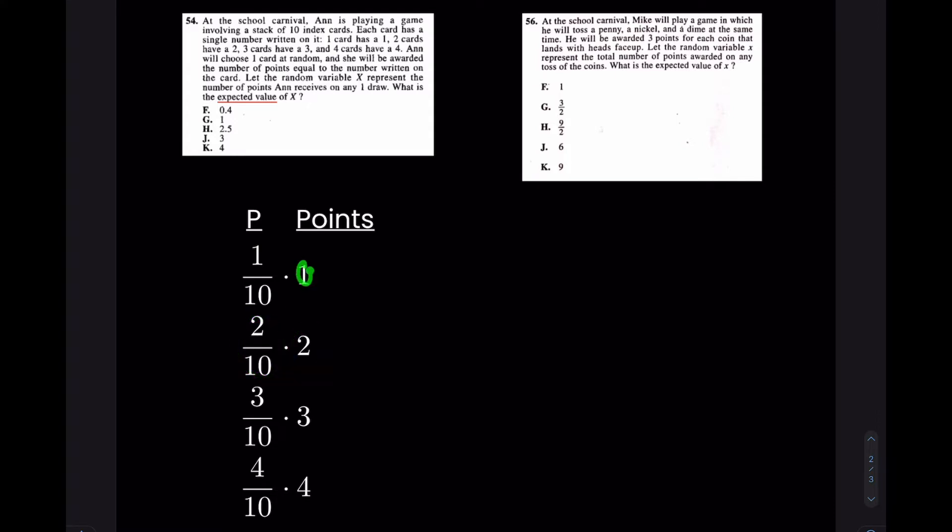So what was the chance that she got that one point card? Again, the card that has a one on it, the chance was one tenth. What's the chance that she pulled the card with a two on it? Well, she had two of them, so two tenths. What's the chance that she drew the card with the threes on it? Well, three tenths, because she had three of them. And what's the chance that she pulled the card with a four on it? Four tenths.